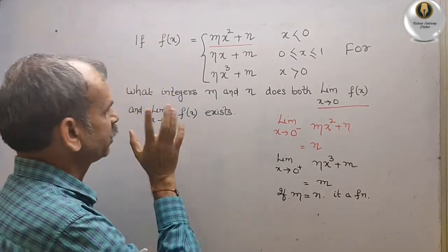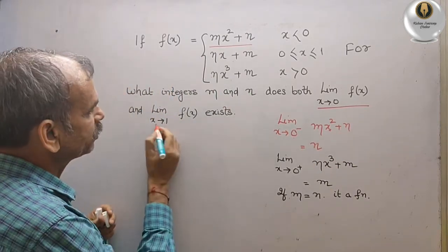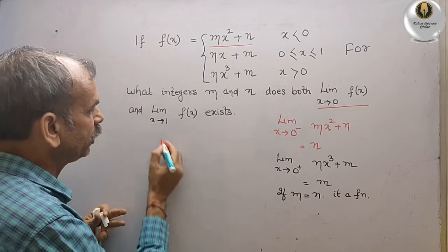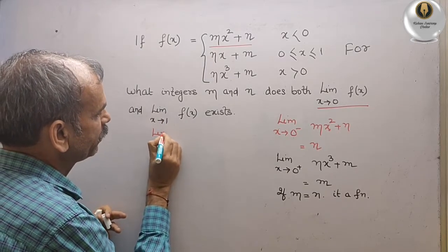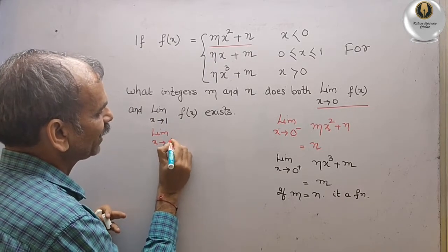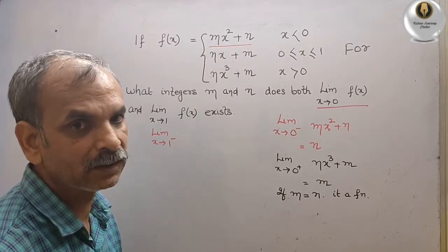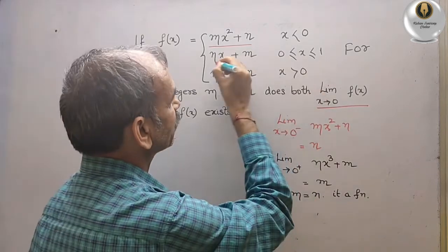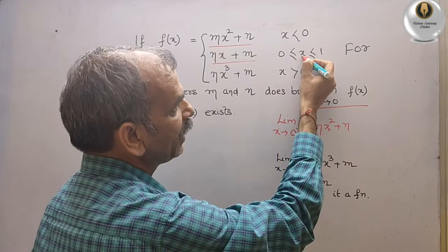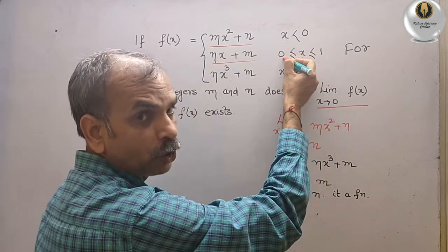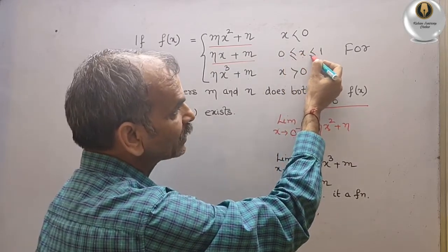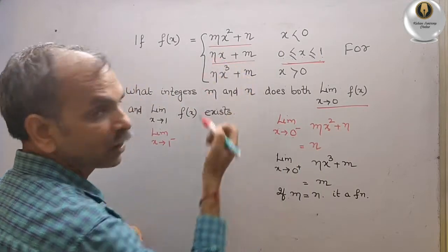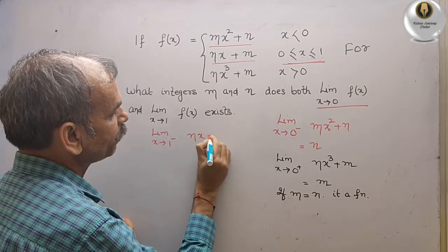Now we go for the limit at x tends to 1. That means we check 1 minus and 1 plus. For limit x tends to 1 minus, we take the center piece — because x should be greater than or equal to 0 and less than or equal to 1 — so we take nx + m.